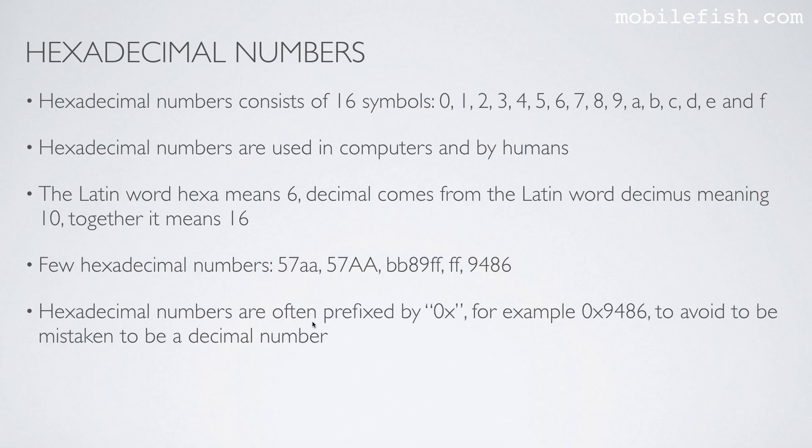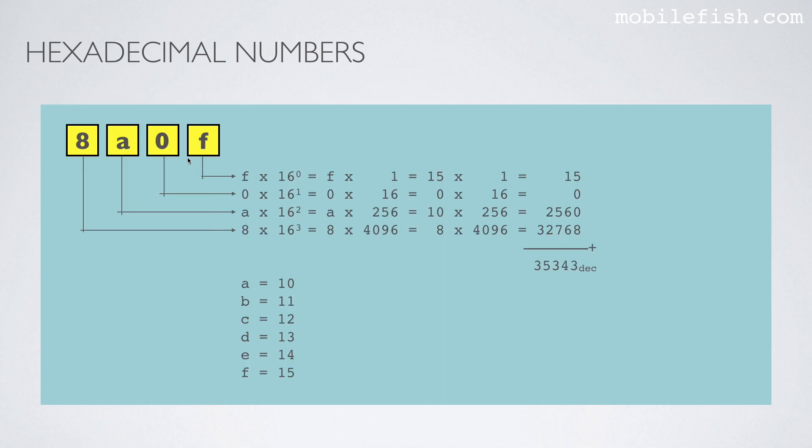Hexadecimal numbers are often prefixed by 0x, for example 0x9486, to avoid to be mistaken to be a decimal number. By prefixing it, you can see that it is a hexadecimal value instead of a decimal value. And a hexadecimal system is called a base 16 numeral system because it has 16 symbols.